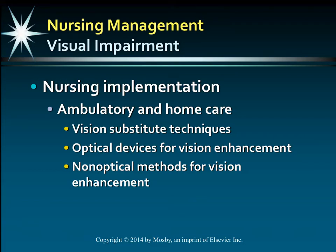Remember, there are different variations of how much vision someone classified as legally blind may have, so you need to assess this. If this is an acute situation, rehabilitation is probably going to be needed. There will be a focus on their independence and productivity, teaching them how to use optical devices if necessary, and making appropriate referrals — for example, state agencies for rehabilitation for the blind.